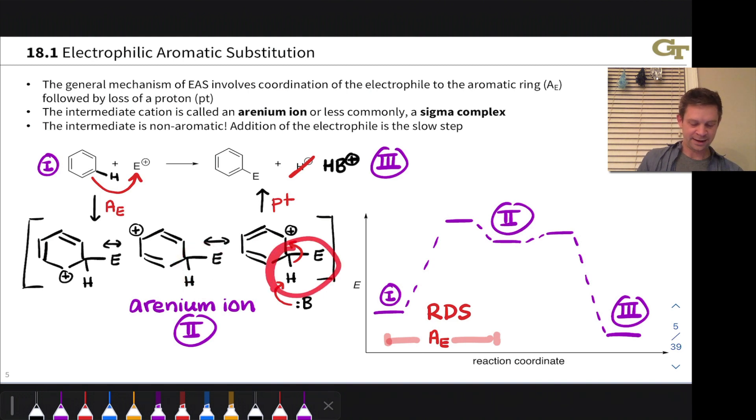Notice that hydrogen that is deprotonated is linked to the same carbon that picked up the bond to E. And this restores aromaticity, gives us the E-substituted benzene product, and releases Hb-plus, the conjugate acid of the base.